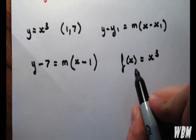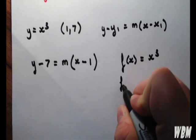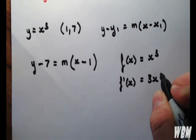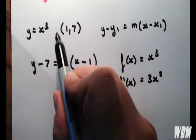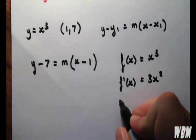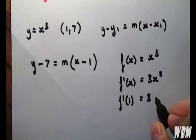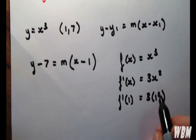We differentiate it, so that's 3x squared. And we simply put the value of x equals 1 in. So, we have 3 lots of 1 squared, and that's 3.